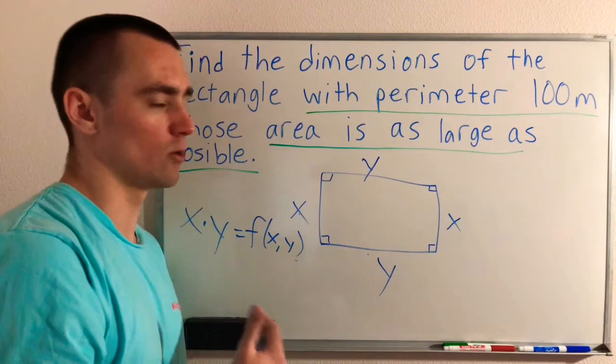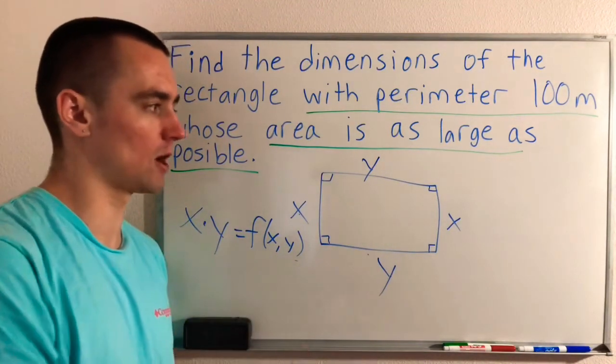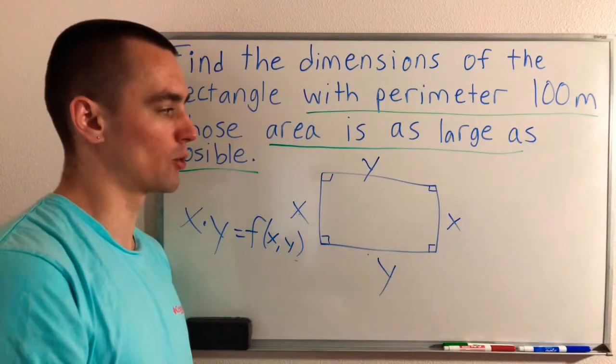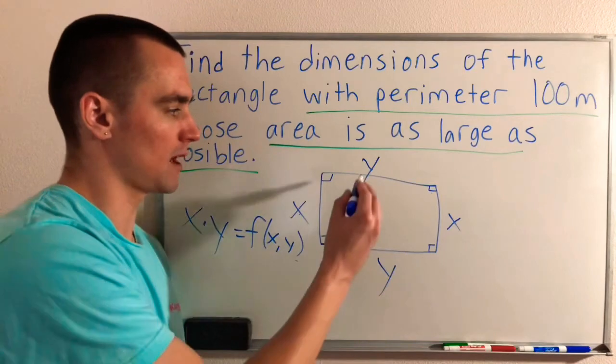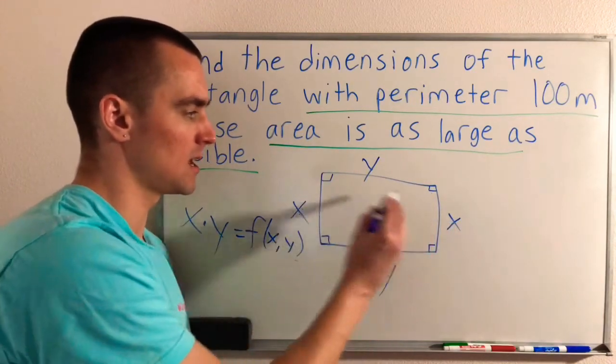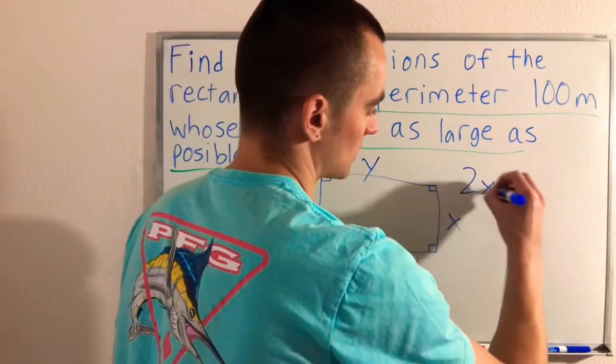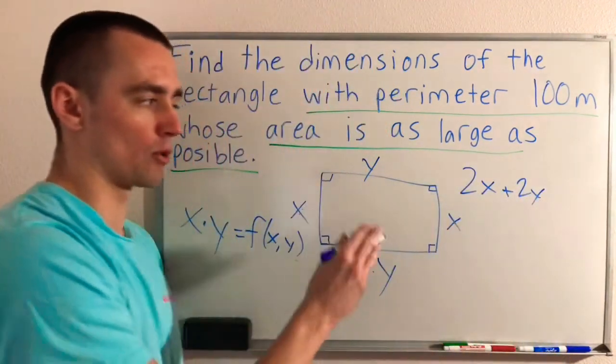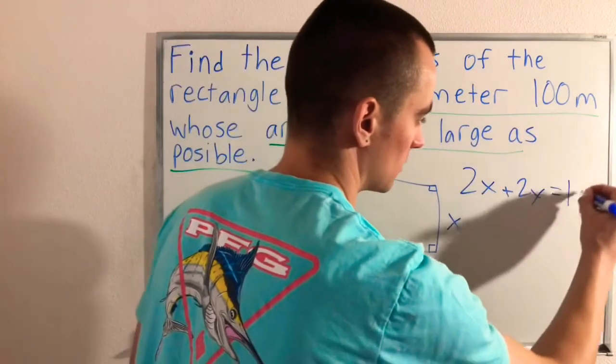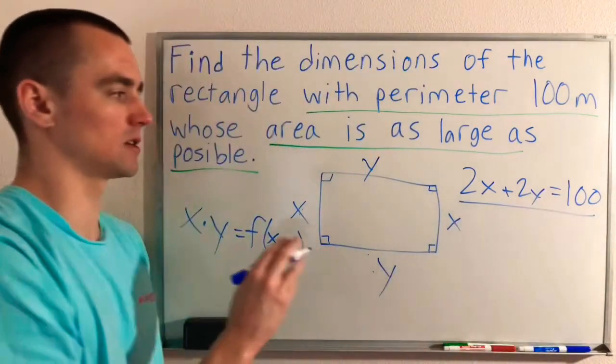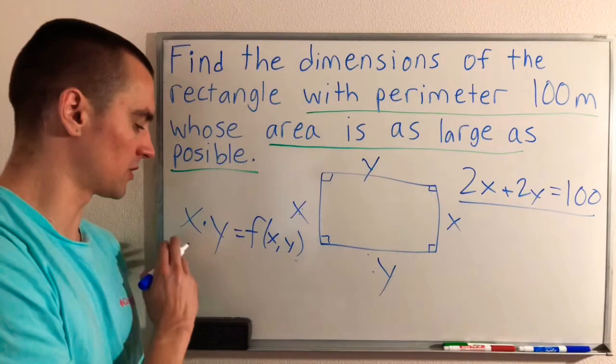But what you want to think about is how you can write their perimeter as a function of X and Y. And obviously the perimeter of a rectangle is just the sum of all four of the sides. So if we add up all four of these sides, we would have two X's and two Y's being added up together. So 2X plus 2Y would give us our perimeter of this rectangle. And we know that the perimeter is 100 meters. So this is the equation that tells us the restriction that we have to deal with. And then this is the function that we're going to optimize.